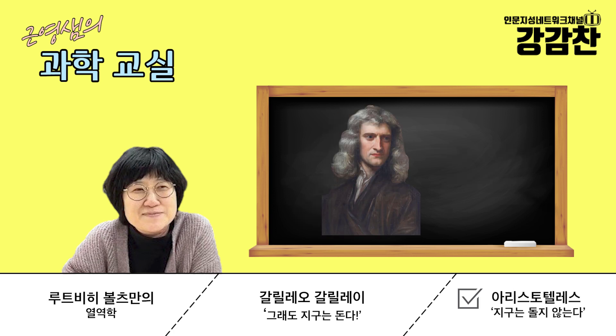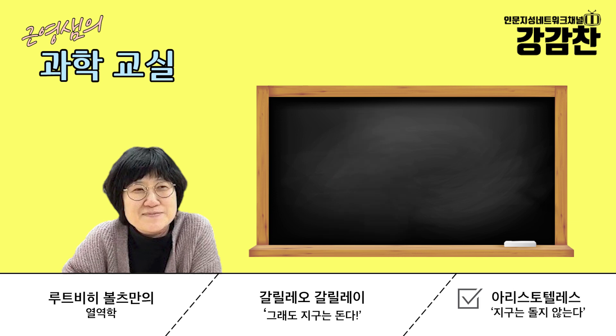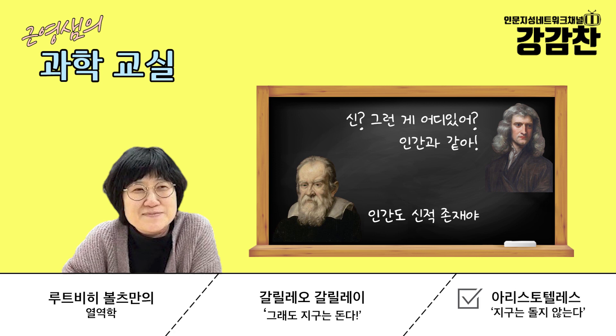뉴턴은 어떻게 했을까요? 아리스토텔레스에서 지구는 직선 운동 한다고 했죠. 뉴턴은 하늘도 직선 운동이라고 하며 하늘을 밑으로 끌어내린 거예요. 결국에는 지구도 우주의 일부분이야 다르지 않아 라는 생각인데, 방식의 결이 완전히 달라요. 갈릴레오는 '인간도 신적 존재야'로 가는 반면, 뉴턴은 '신 그런 게 어딨어, 인간과 같아'라고 생각하는 거예요. 하늘의 운동도 다 지구의 운동처럼 끌어내려 버립니다.